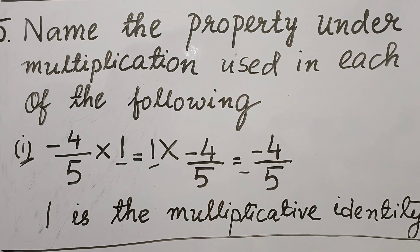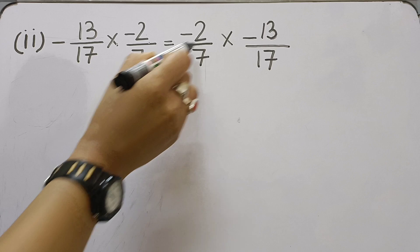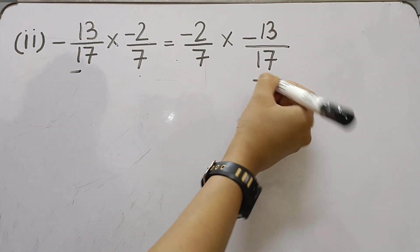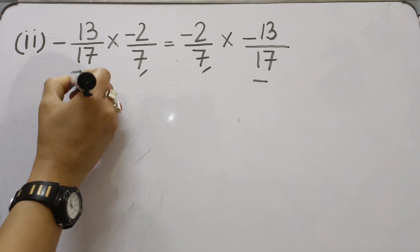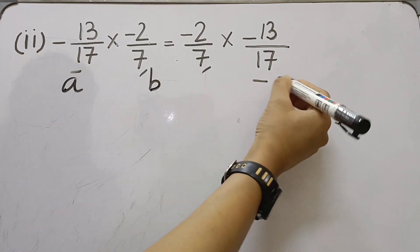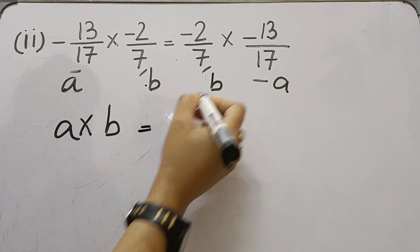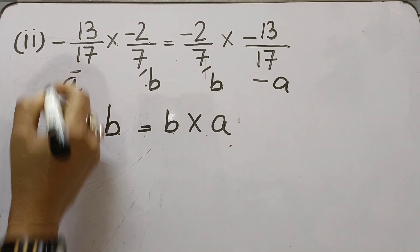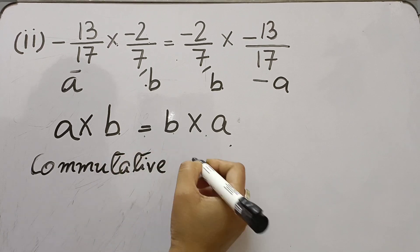Now for Part 2: (-13/17) × (-2/7) = (-2/7) × (-13/17). Here, (-13/17) appears on both sides and (-2/7) appears on both sides. If we let A = (-13/17) and B = (-2/7), then A × B = B × A. This is the commutative property of multiplication.